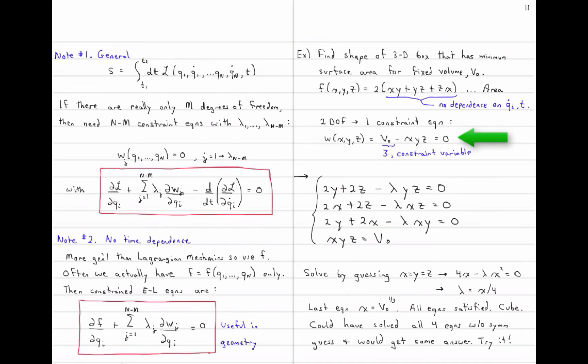Here I want to identify something. V0 will come to be known as a constraint variable — eventually I'll call it zeta. Applying the Euler-Lagrange equation for x, y, and z gives three equations, and adding the constraint equation xyz equals V0 gives a fourth. So I have four equations and four unknowns: x, y, z, and lambda. You could solve these without intuition, but geometric symmetry tells you the answer will be when x, y, and z are all equal.